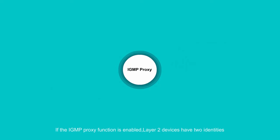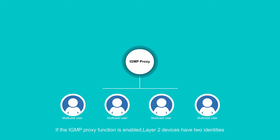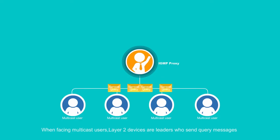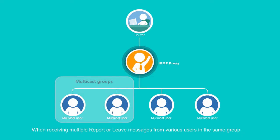If the IGMP proxy function is enabled, Layer 2 devices have two identities. When facing multicast users, Layer 2 devices are leaders who send query messages. When facing the router, these devices are employees who send report and leave messages. When receiving multiple reports or leave messages from various users in the same group, Layer 2 devices send only one report or leave message to the router.